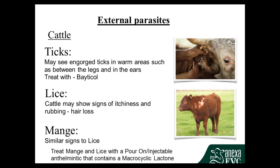Lice cause animals to be very itchy and will cause them to rub themselves raw — initially just hair loss, but they'll keep rubbing until they break the skin. In cattle, because they're what we call sucking lice — they actually drink bodily fluids and blood — they will be killed by drenches containing a mectin-family ingredient, such as Eclipse or Bossivon. Note that RES-C will not treat lice, so if you think you have a lice problem you'll need to use a different drench.